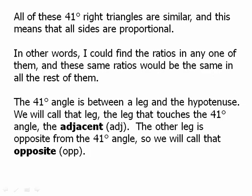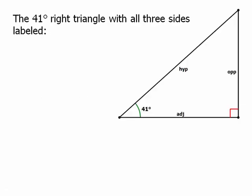The 41 degree angle is between a leg and a hypotenuse. We will call that leg, the leg that touches the 41 degree angle, the leg that is adjacent to that angle. The other leg is opposite from the 41 degree angle, so we call that the opposite. So here we have the triangle with the three sides labeled: the hypotenuse, the opposite, and the adjacent.